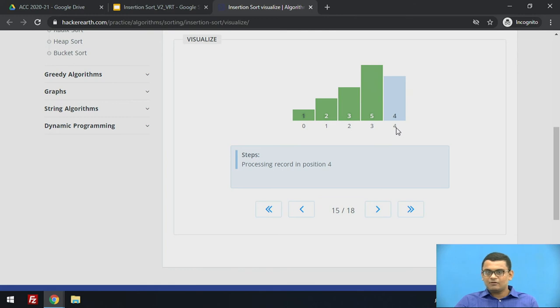Now element 4 with value 4 will be shifted till its value is less than the element at the left. So it is shifted one position and since this value is greater than the value at the left, we will not shift the elements and it finds its final position in the array and we are done with the sorting. This was the simulation of insertion sort.